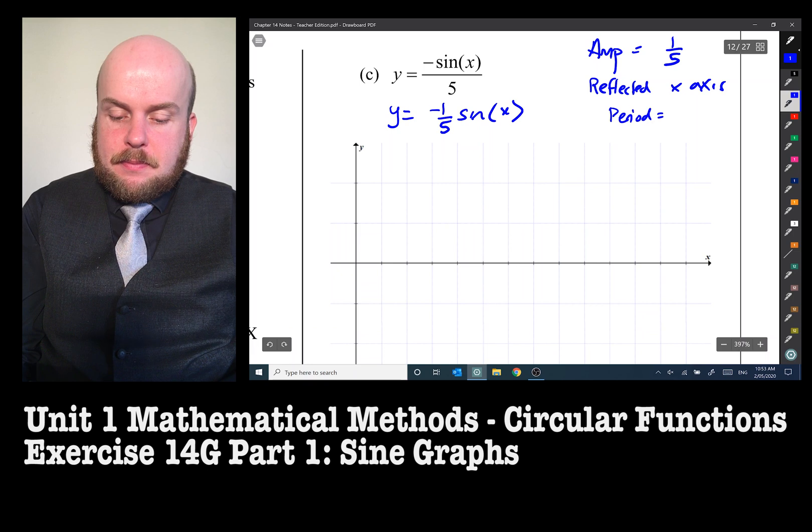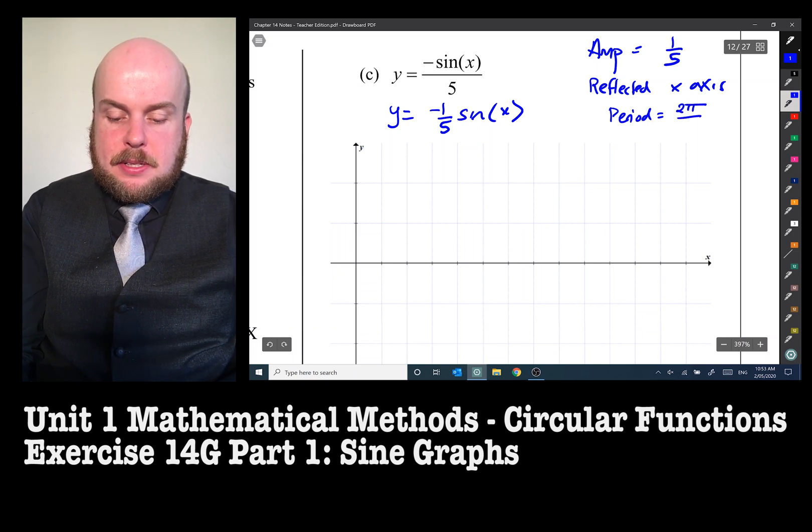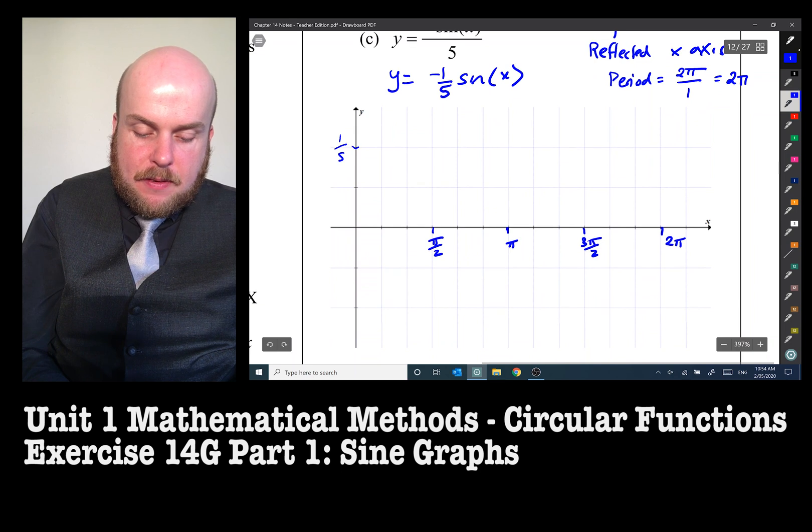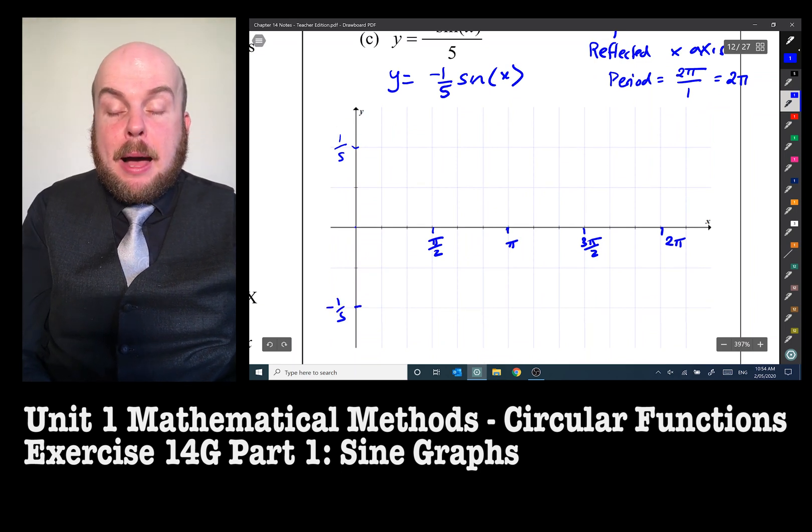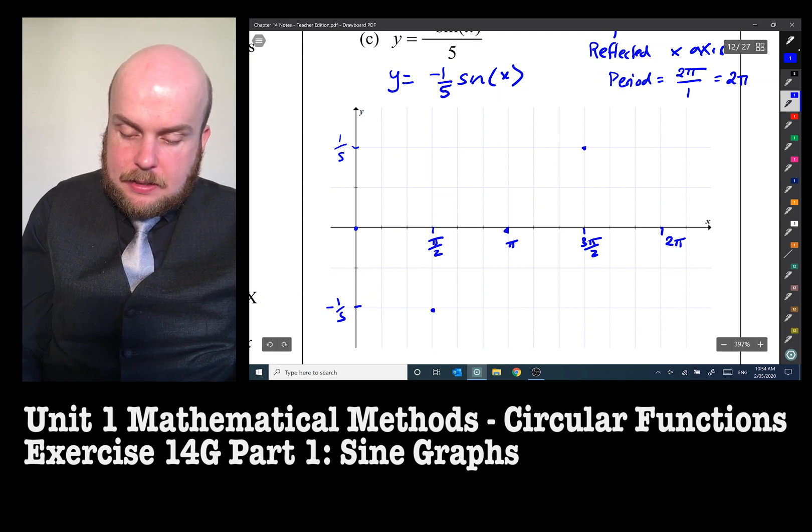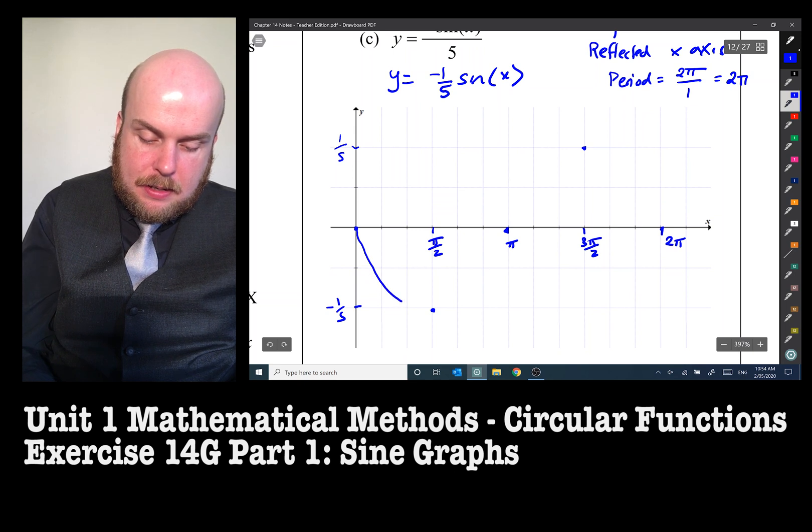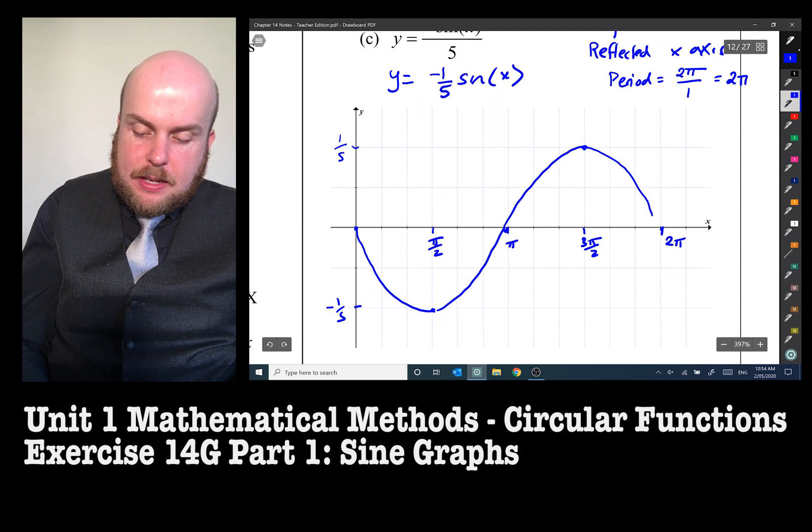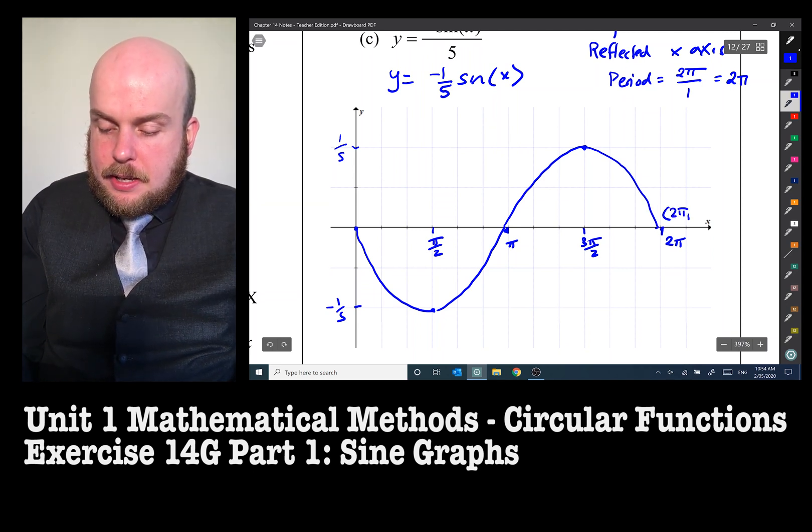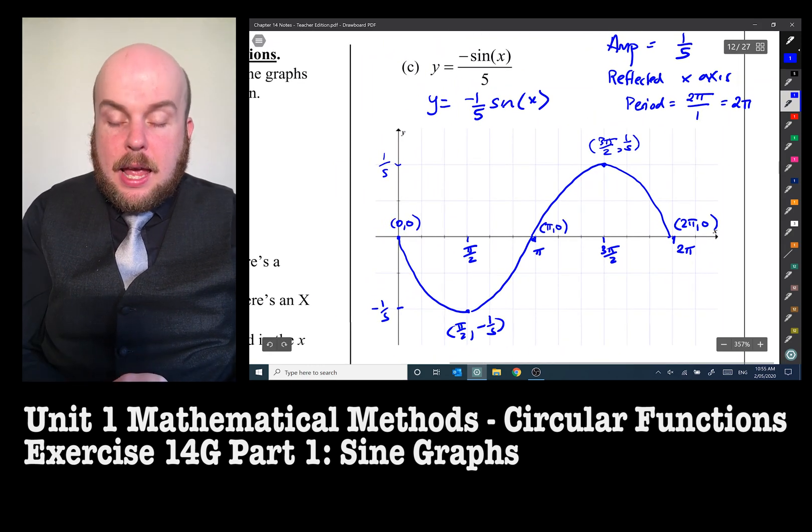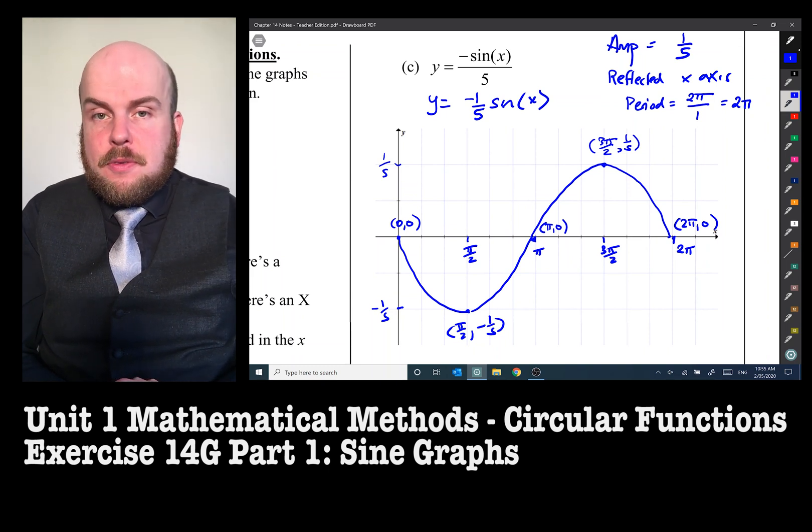The period is two pi over one because there's no value next to that x, so there's two pi. The amplitude, that means the largest will be one fifth, the smallest will be one fifth. Now this time it's going upside down, so it actually goes like this. But here we are. And there's our graph. Put in all of our coordinates. And there's the graph of negative sine x over five.